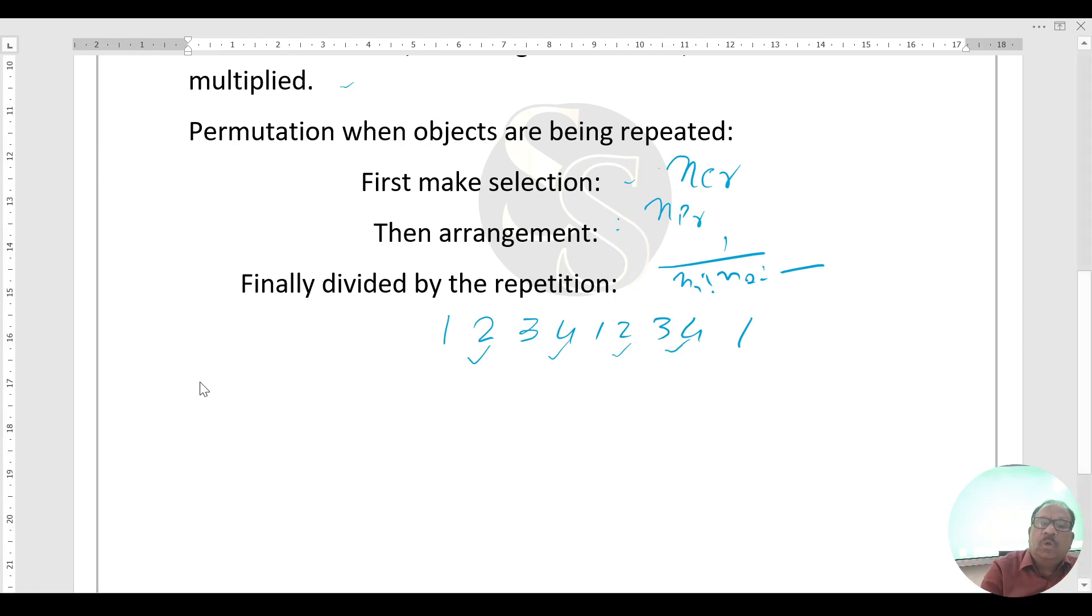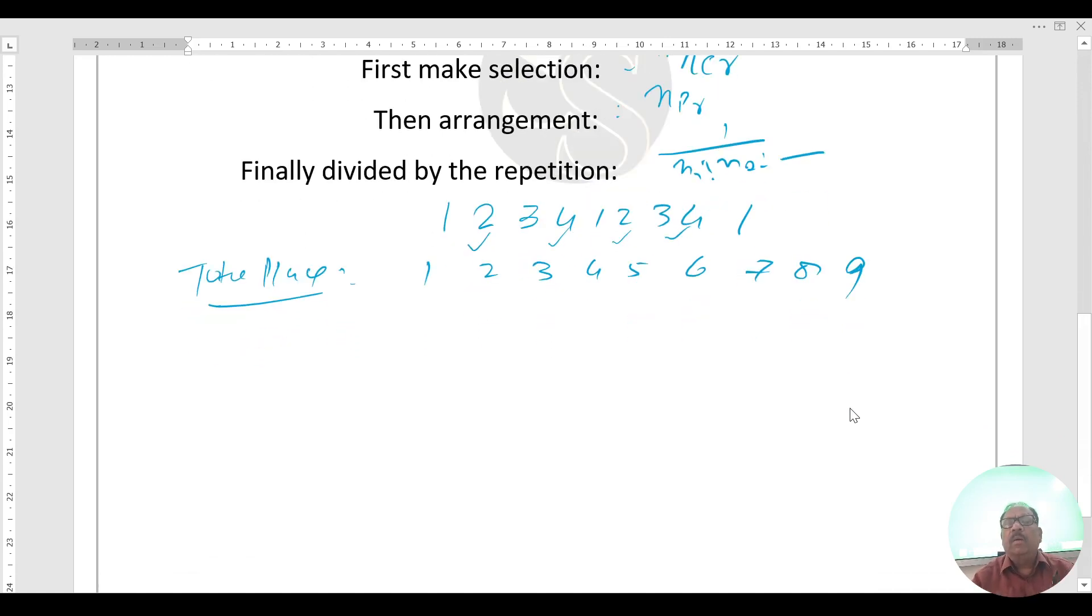First of all, total places are 9: 1, 2, 3, 4, 5, 6, 7, 8, 9. Now even places like this: 2, 4, 6, 8. Two, four, six, eight.